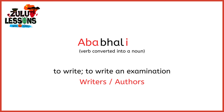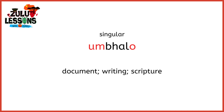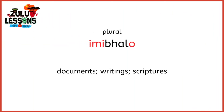Let's look at a different class — class 2. We know the singular prefix is UM and the plural prefix is IMI. Here we put UM, then our verb with the A stripped, and O at the end, and now we have UMBALO — a document. So it's no longer just the verb to write, BALA, nor the author UMBALI; it's now a document. The plural is IMIBALO — writings, scriptures, documents.